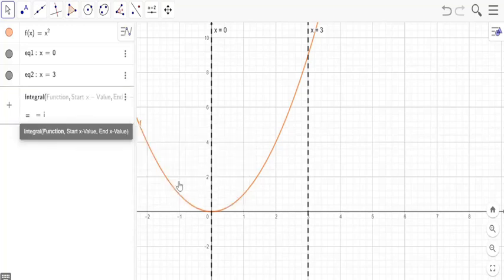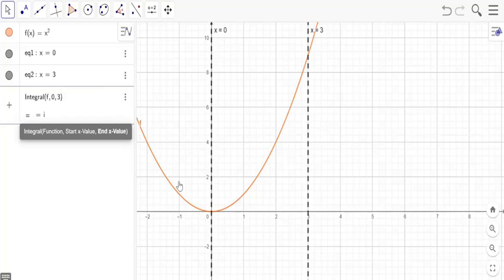So first I'll have to define the function. So here, I'll be writing f. That's the function we are talking about. The lower limit is 0, so that's x equals 0. So I'll just write 0. And the upper limit is x equals 3. So I'll just write 3 and enter.